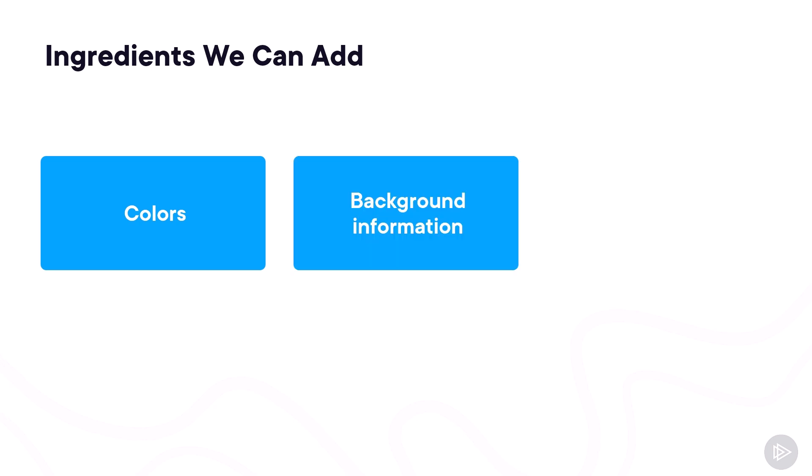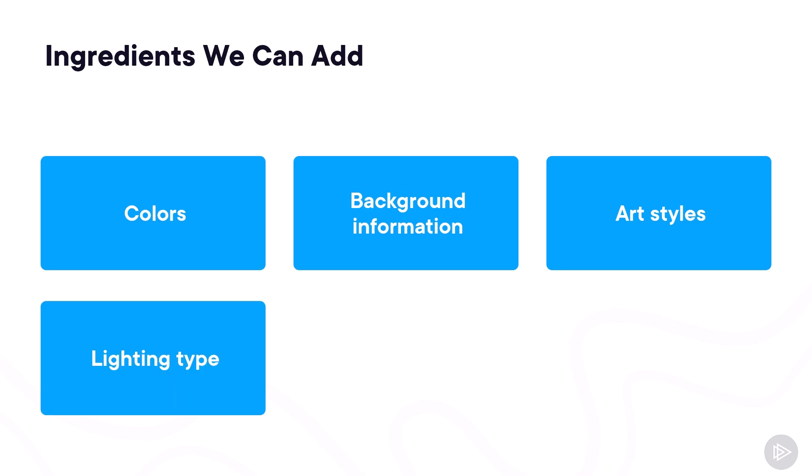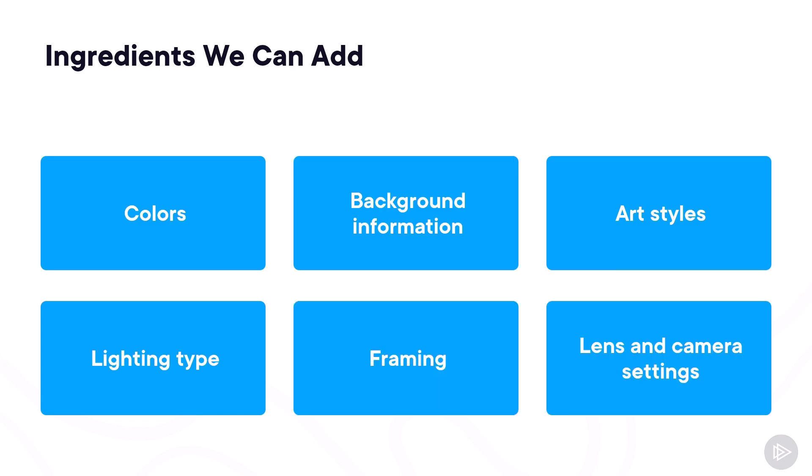We can add things such as the colors you want in your image. You can specify background information, the art style you want — that is very important. You can also specify the type of lighting that you want, the framing, and even the lens and camera settings that you would have used for the image you want. Let's deep dive into some of those.